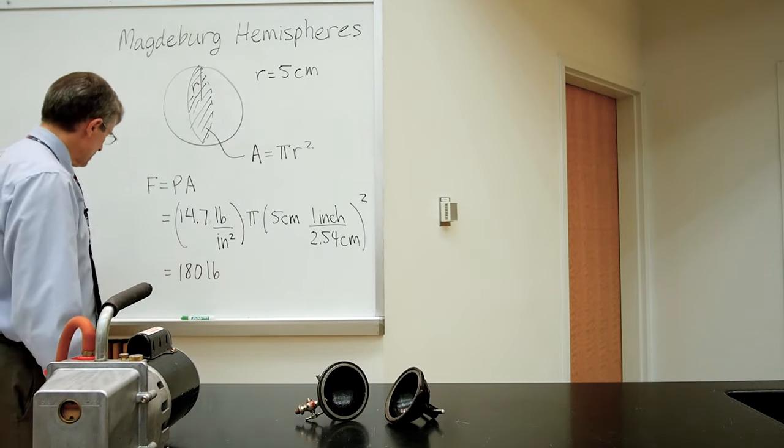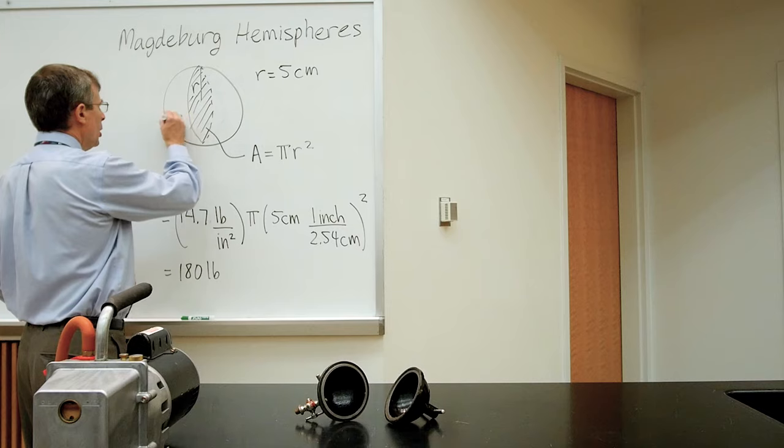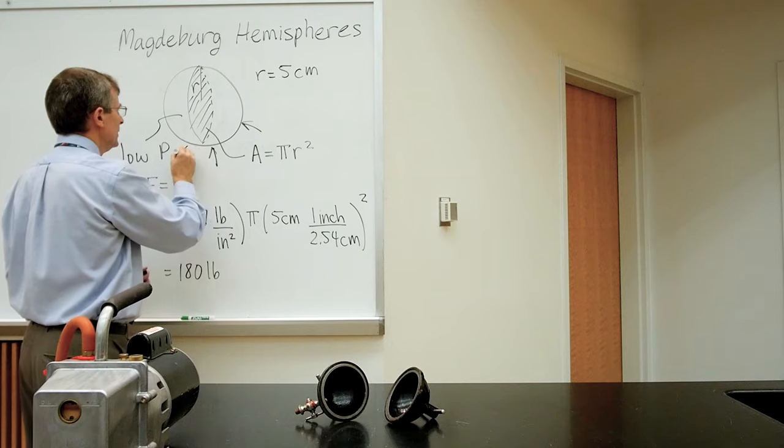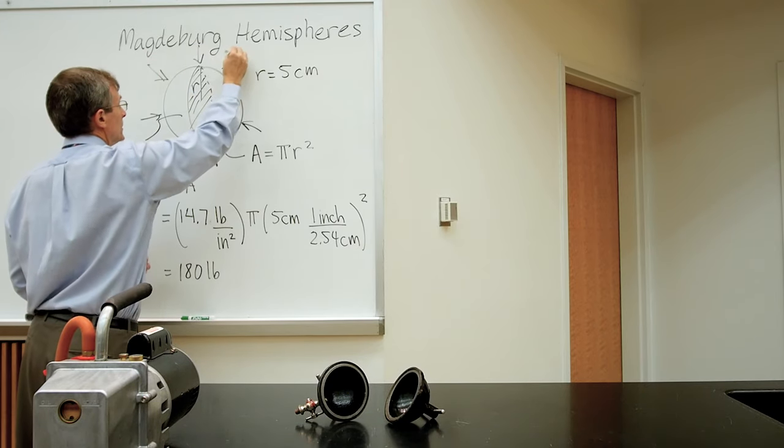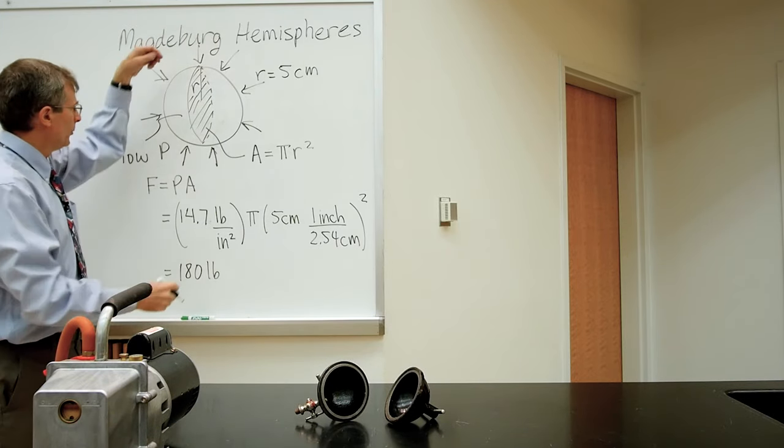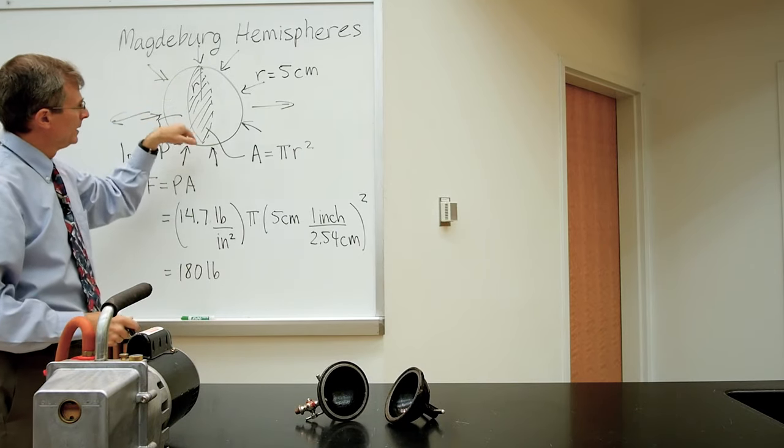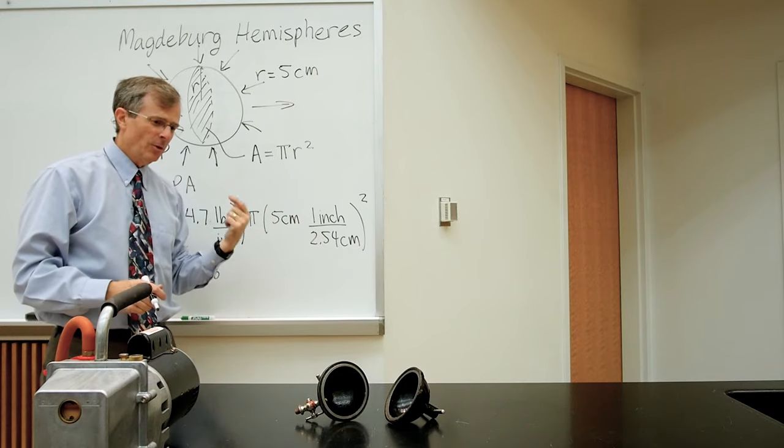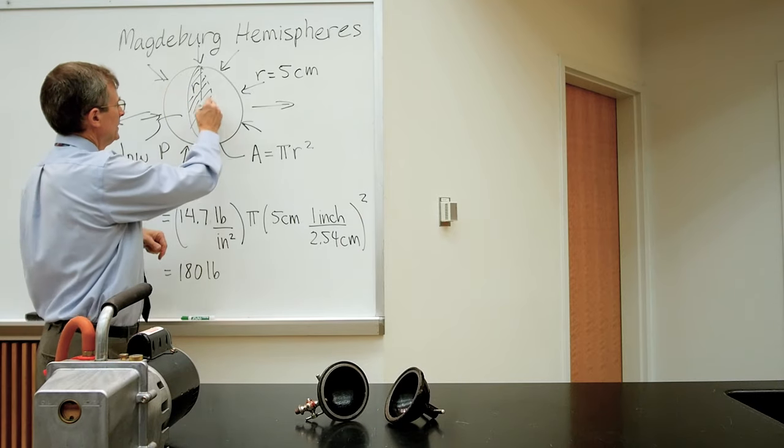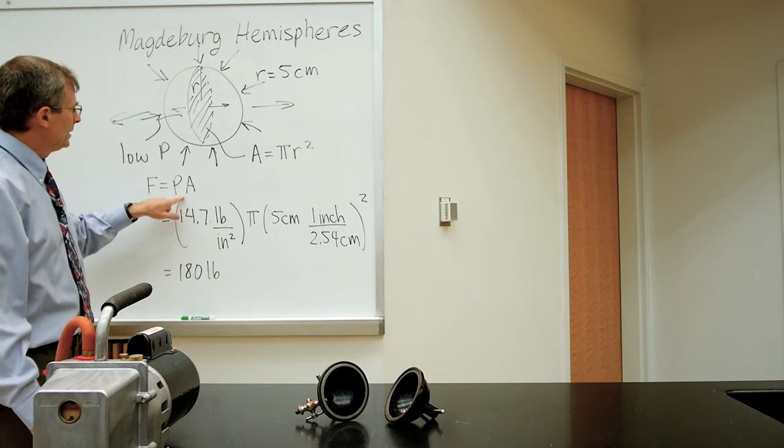When you evacuate these hemispheres, the pressure will be low here, and outside will have atmospheric pressure pushing in from all directions, which holds the hemispheres together. But some of that force is not directed in the direction we were trying to pull. We're trying to pull them apart this way. So the area that's pertinent here in order to find the actual force required to pull them apart is this cross-sectional area which is perpendicular to the direction that we were pulling.